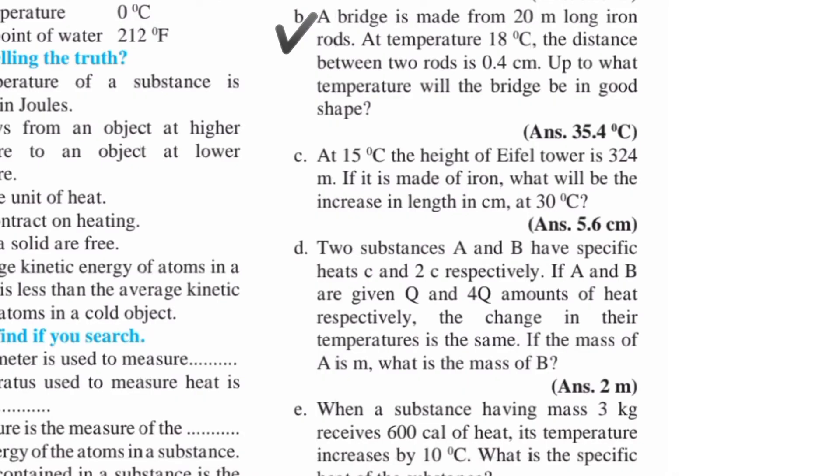B: A bridge is made from 20 meter long iron rods at temperature 18 degree Celsius. The distance between two rods is 0.4 centimeter. Up to what temperature will the bridge be in good shape?